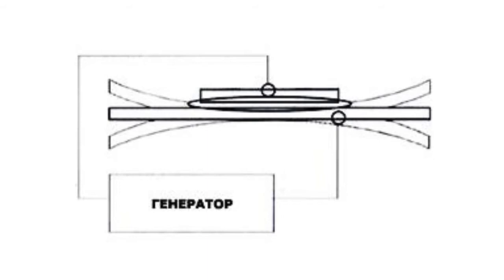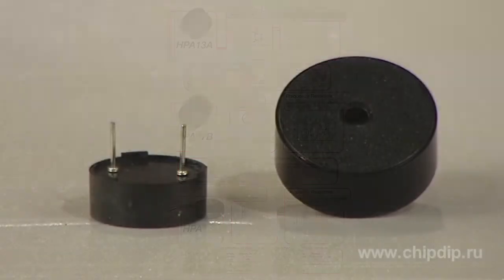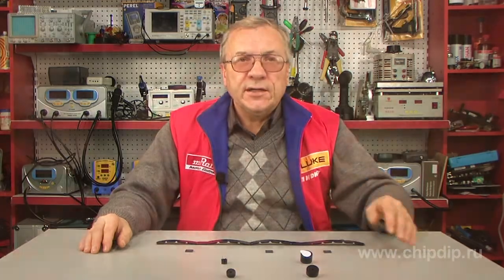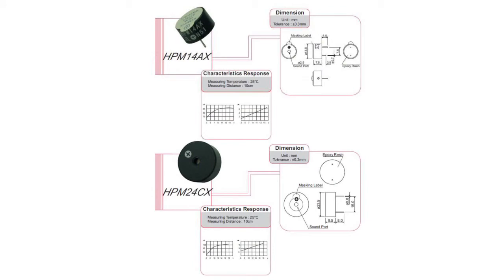G-World offers various series of piezo sound generators. The HPA series products have an unsealed structure. The electrical connection can be achieved in three ways: with pins, wire, or connector. They can come with or without an oscillator circuit, and are also wave soldering compatible.